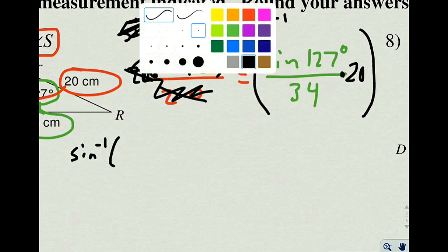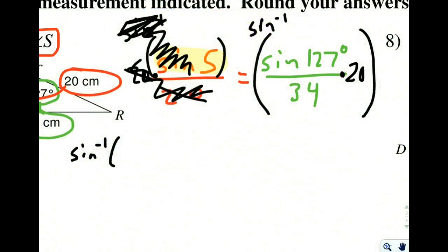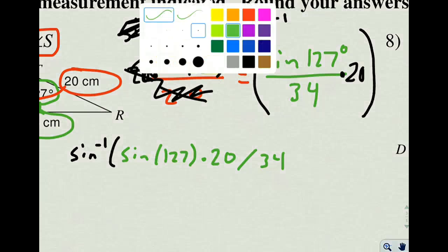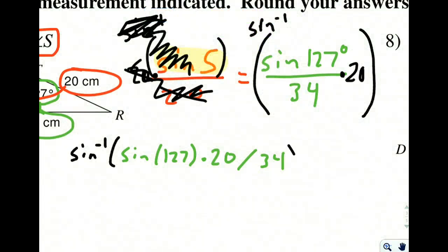So we're going to have our sine inverse of, and that's where we open our first parentheses. Then we're going to take our sine of 127, put parentheses around that, times 20, divided by 34,